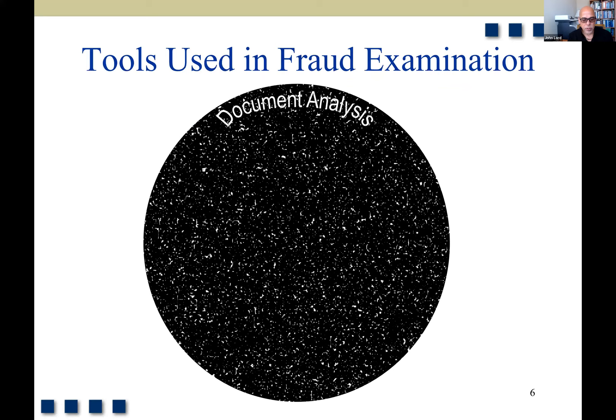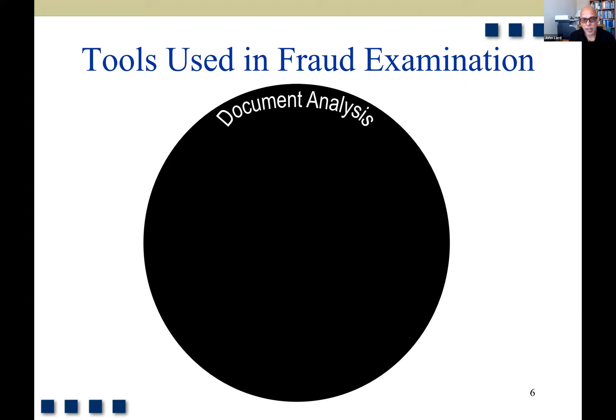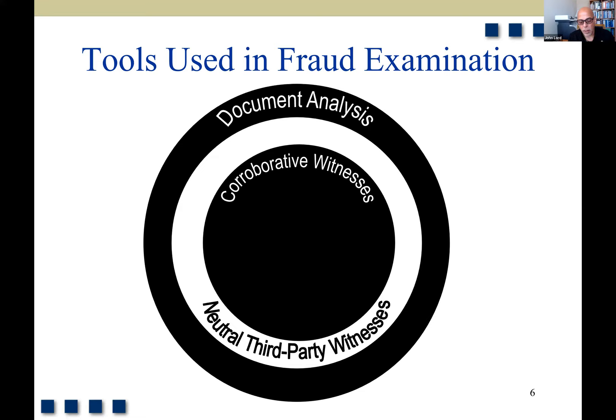When we look at the tools used — document analysis: we may look at documents to determine who may have witnessed things, and then we start to talk to those neutral third parties. We look at document analysis of evidence that something's going on, and then we try to corroborate that through witnesses.